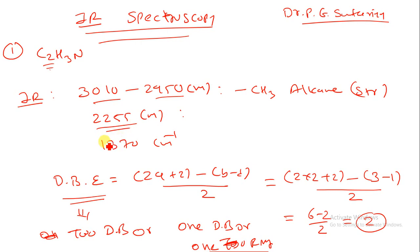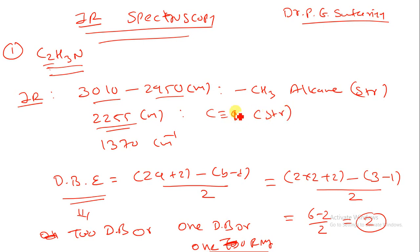The most important peak: in my previous lectures I explained that a peak near 2200 up to 2300 cm⁻¹ indicates C≡C or C≡N. Since this structure contains nitrogen, we can say C≡N stretching may be present.